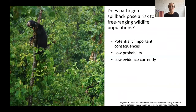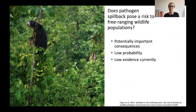Thinking more broadly about whether pathogen spillback poses a risk to free-ranging wildlife populations: while the consequences are potentially great, it is considered fairly unlikely. Just because it can occur doesn't necessarily mean it will. But there's also not been a lot of critical analysis about that risk — there's a lot of uncertainty around the drivers of a potential spillback event, including what pathogen factors, host factors, and environmental factors might precipitate such an event.